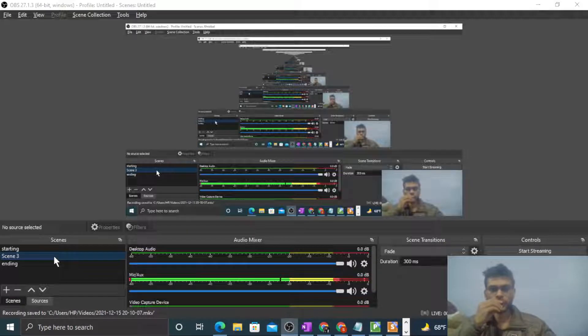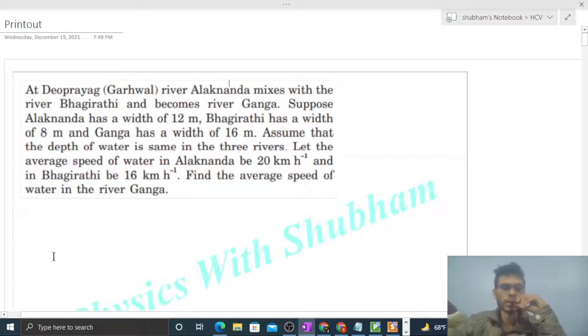Okay, hi everyone. Today let's discuss one interesting problem. It says at Devprayag, river Alaknanda mixes with the river Bhagirathi and becomes river Ganga. Suppose Alaknanda has a width of 12 meters, Bhagirathi has a width of 8 meters, and Ganga has a width of 16 meters. Assume that the depth of water is the same in the three rivers.